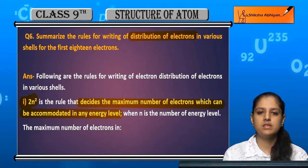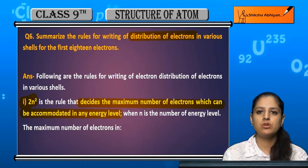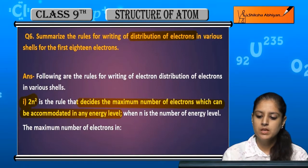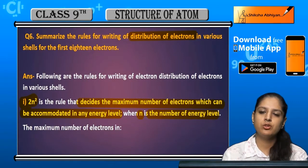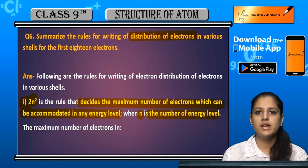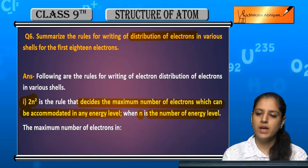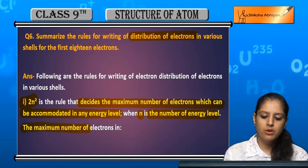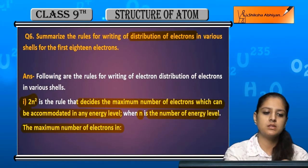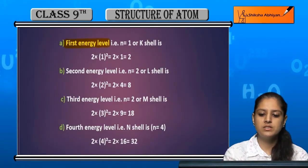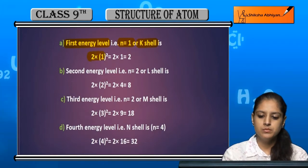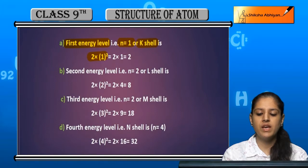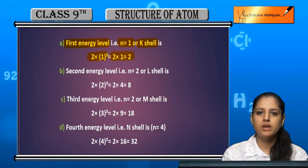In this rule, n is the number of the energy level. If it is the first energy level, n equals 1; second, n equals 2; third, n equals 3, and so on. For example, for the first energy level — the K shell — we calculate 2 multiplied by 1 squared, which is 2 into 1, giving 2.